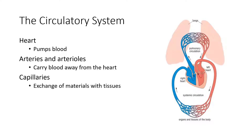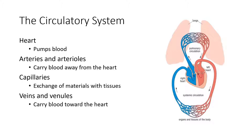Capillaries are the smallest units of our blood vessels, exchanging oxygen, carbon dioxide, and nutrients with tissue. Veins and venules carry blood towards the heart, regardless of whether they are pulmonary or systemic. This means our pulmonary arteries carry deoxygenated blood to the lungs, and then the pulmonary veins take oxygenated blood from the lungs back to the heart.